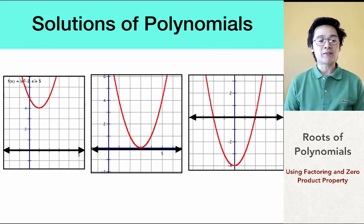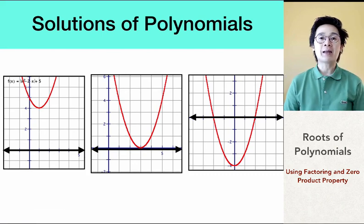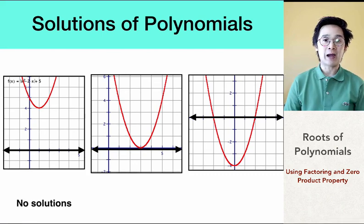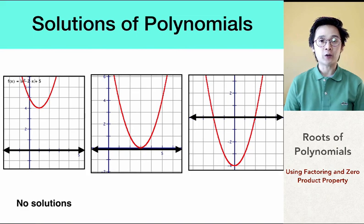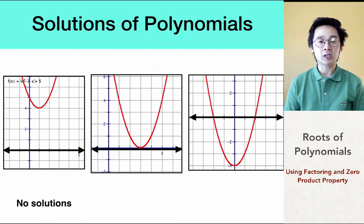The three parabolas we have are touching the x-axis in several ways. For the first graph, the parabola opening upward is not touching the x-axis. When that happens, the quadratic equation has no solution because graphically we're not seeing a point of intersection of the parabola on the x-axis.